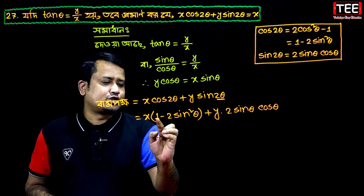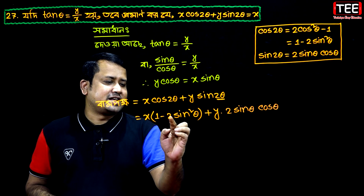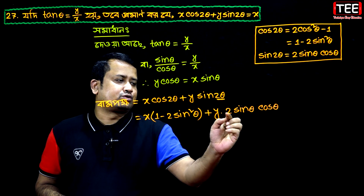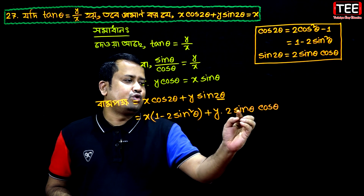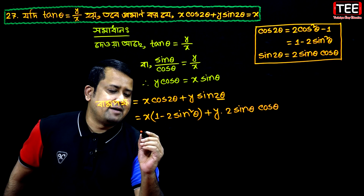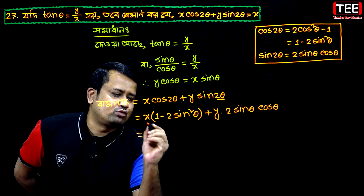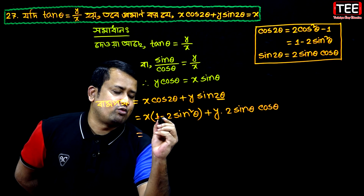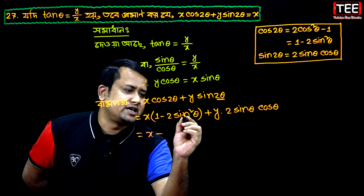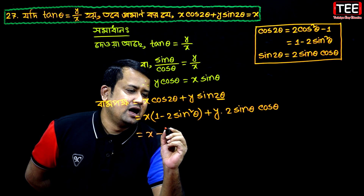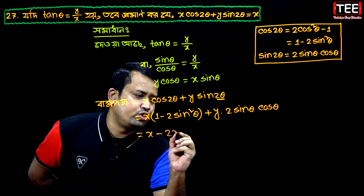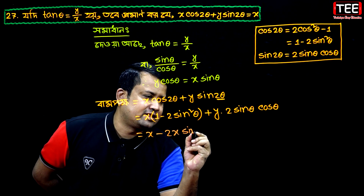cos 2θ is 0, giving 1 minus 2sin²θ cosθ, and sin 2θ is 0. Then I will give the brackets to the x — x is 1. I will give the brackets to the θ. That gives 2x sinθ cosθ.